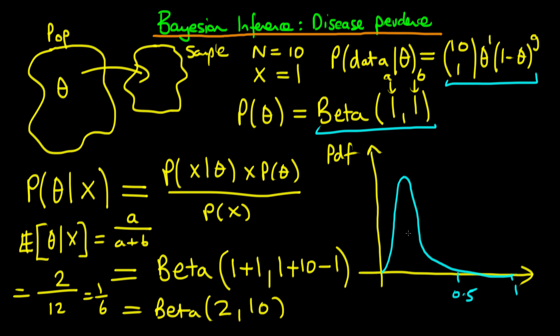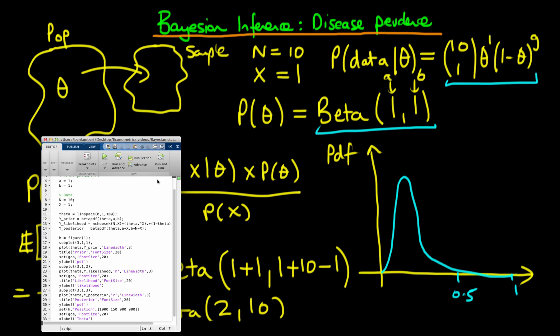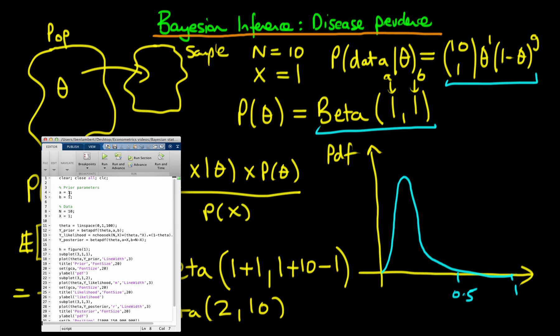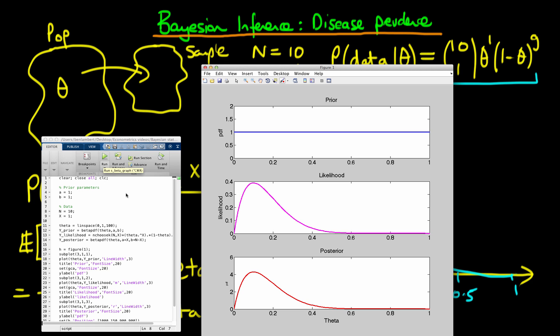But I don't want you to take my word for it, I've actually coded this up in MATLAB, and this allows us to run simulations exactly as I've just said here. So what we're doing here is we're starting off with a and b being 1, and we're starting off with a sample of 10 from which one individual in that sample has the disease. So let's run this.